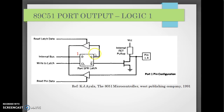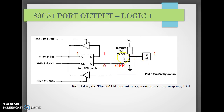When we write logic 1 to the D-Latch, Q becomes 1 and Q-bar becomes 0. So this transistor is off, and the pin is pulled high by the internal active pull-up. Because the transistor is cut off, the circuit is completely disconnected, so the pin can also be used as an input.